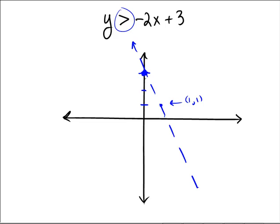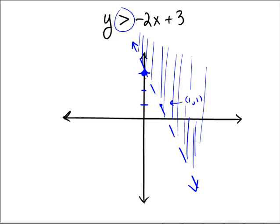And then, is this going to be shaded above or below? Well, since it's Y is bigger than the line, that means we're going to shade above the line. And so the shading would occur on this side.